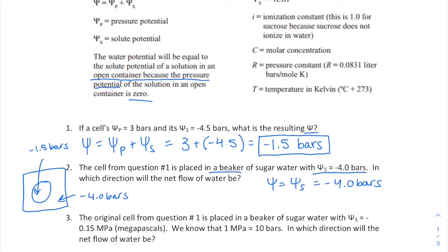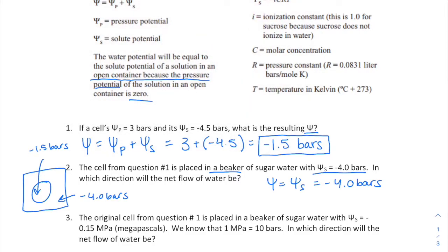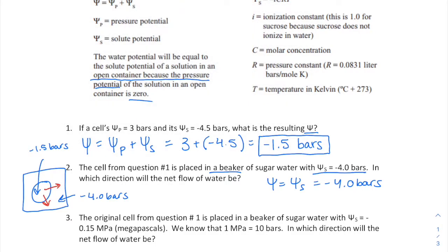Since water moves from high water potential to low water potential, we go from negative 1.5 to negative 4 — the net flow of water is out of the cell.